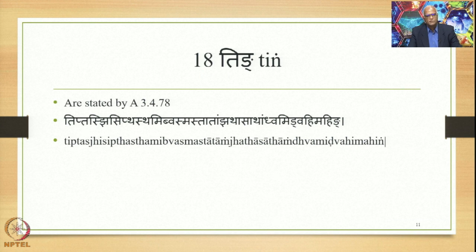Let us now take a look at the ting suffixes. Ting suffixes are 18 in number and they are stated by sutra 3.4.78. Once again, we have a big sutra involving all these 18 suffixes placed side by side.